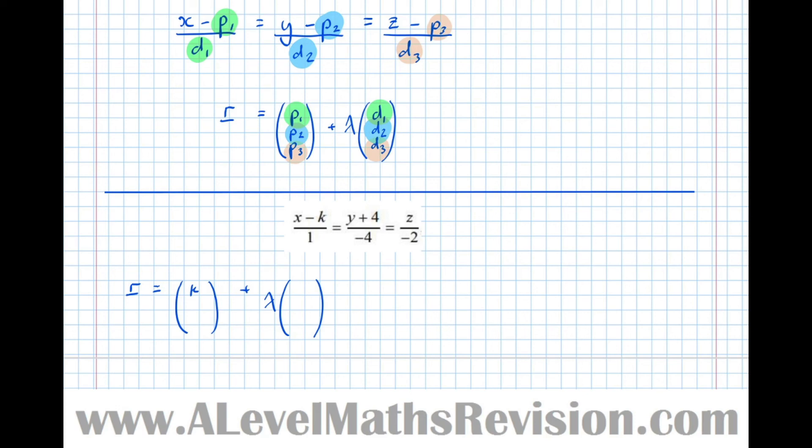Here y plus 4, well that means that minus 4 must be the y component, and z minus nothing, so we get k, minus 4, 0. Then plus lambda, the direction, where the directions are just the denominators: 1, minus 4, minus 2. So pretty straightforward. Let's try and do it the other way around now.